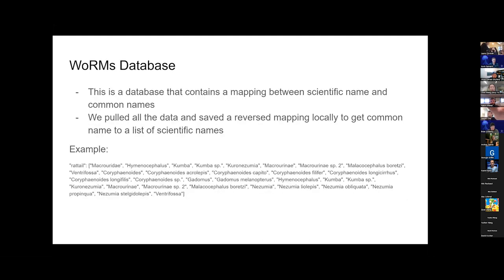The WoRMS database used in the first step for common-to-scientific name matching is basically a dictionary that maps common names to a list of all the scientific names. As we can see in this example, 'rattail' would be the common name, and we have a list of many different creatures that correspond to this name.